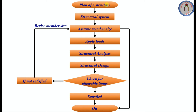Here is an overview of the structural design process. First, get the architectural floor plan, then decide the structural system — whether RCC or steel, and whether conventional method, RC wall system, or flat slab system. Once the structural system is finalized, assume the member sizes, then apply the loads on the members. After applying loads, perform the analysis using software like STAAD or ETABS, then obtain the analysis results — the forces developing in the structural members.